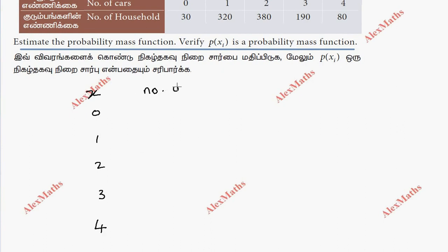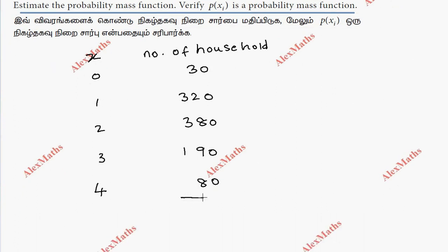Number of household, number of families. 0 car is 30, this is 320, this is 380, this is 190, this is 80. Total is 1000.